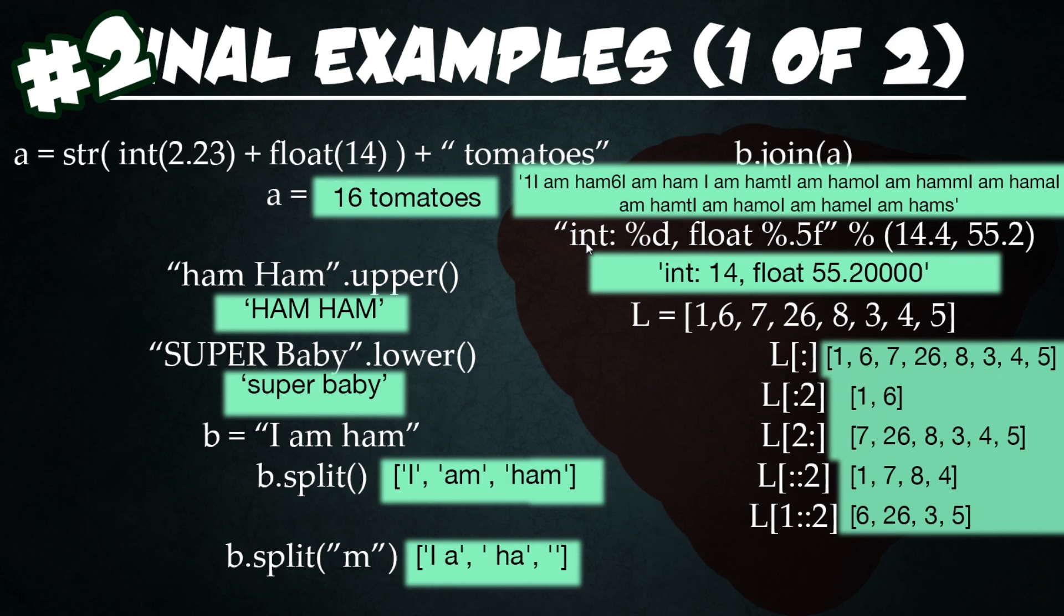Next we have another string operation, which is the percent sign d, which will say substitute this in with an integer, or a whole number. And so that's going to substitute 14 in here. And then we also have percent sign dot five f. So what that's saying is that we're going to have five zeros after the decimal point, and it's going to be a floating point number. So this 55.2 is actually going to be output to 55.20000.